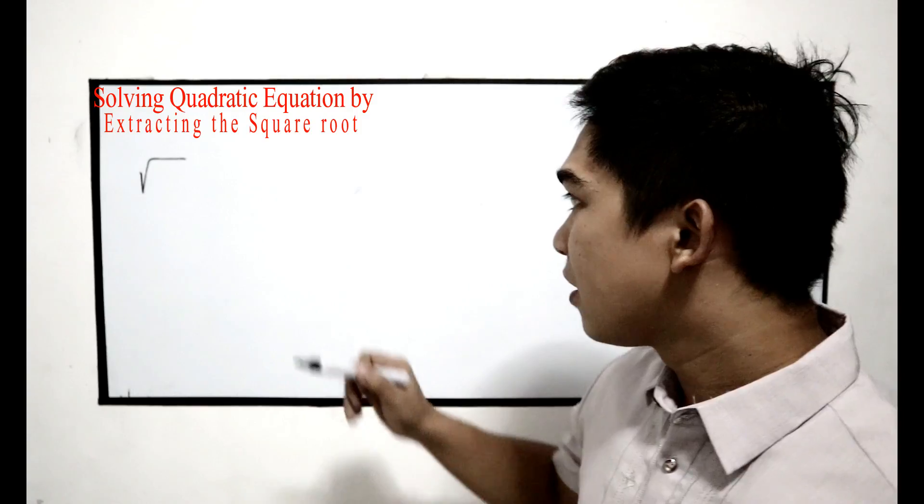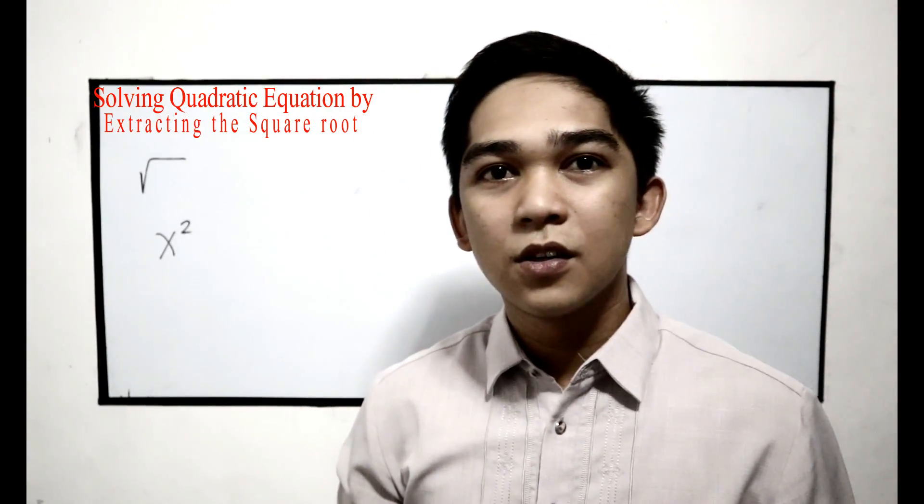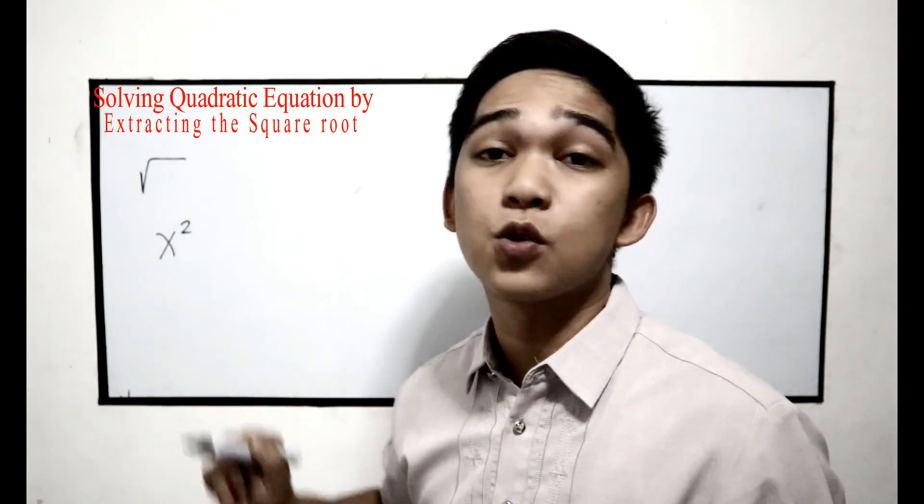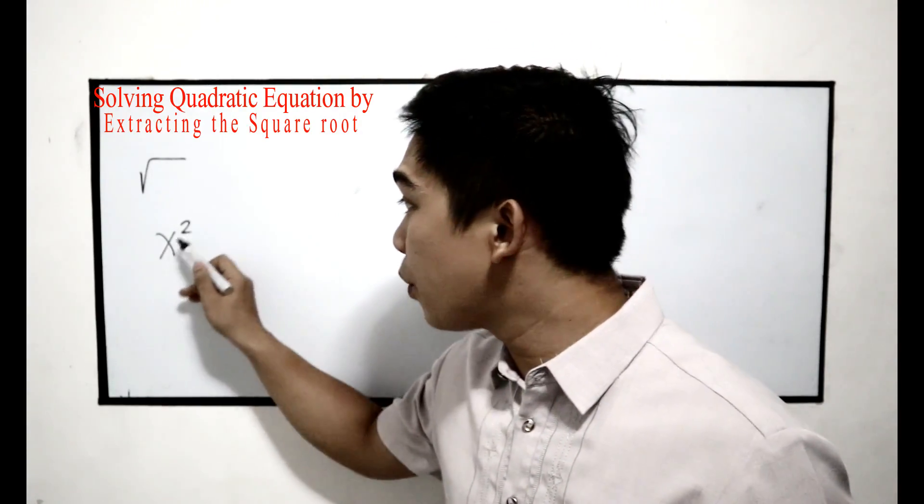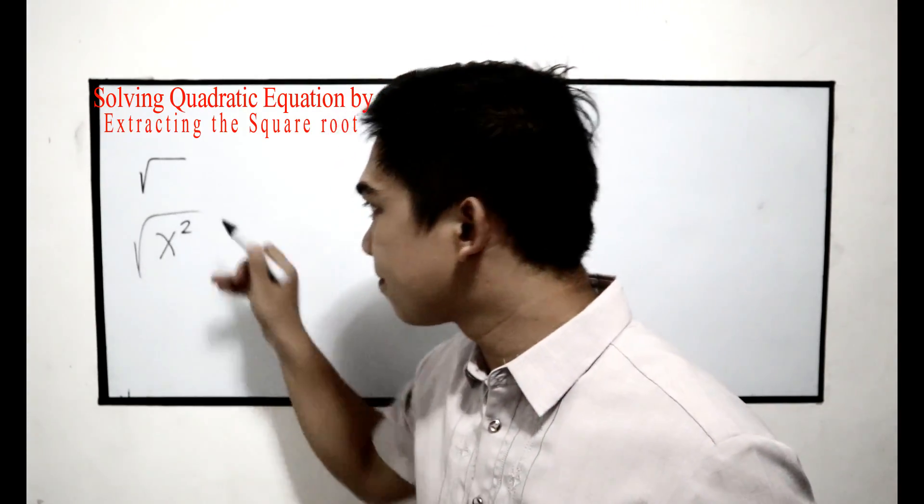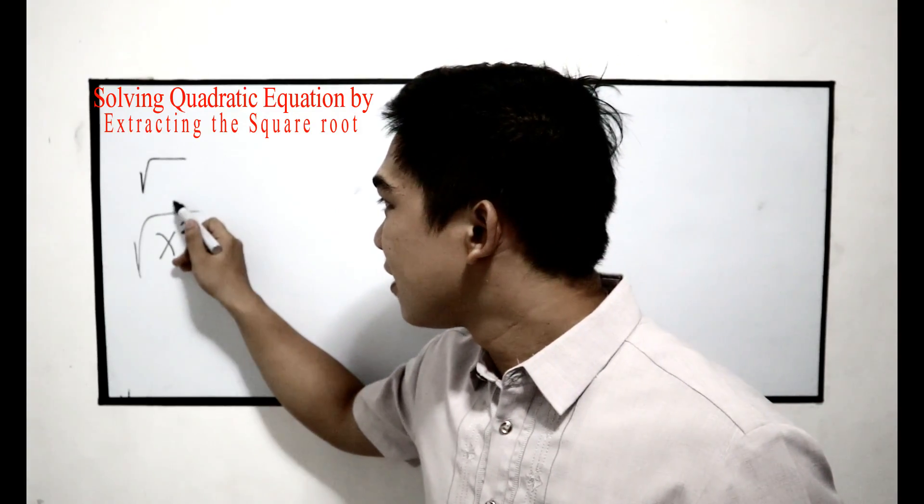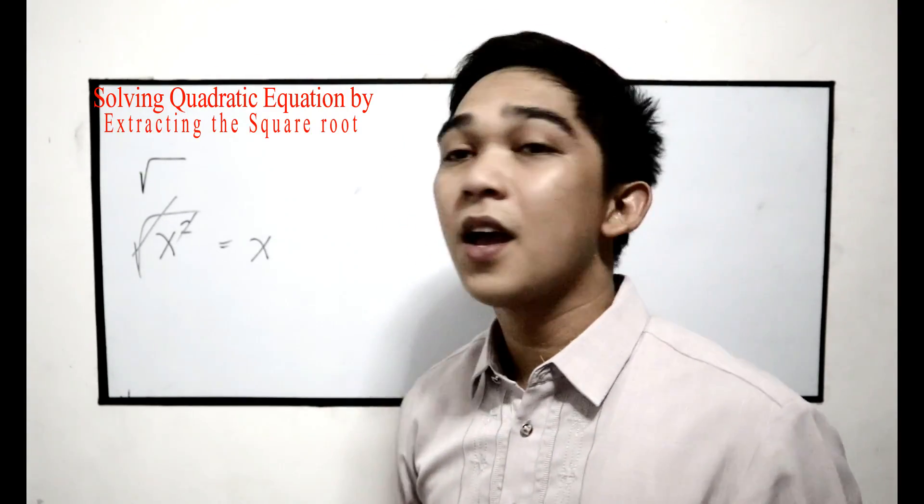Let's say if we have x squared. What is the relationship of the square and the square root? In this expression, if we're going to extract the square root, the square root will be cancelled out, and the square will be cancelled out. And this will become equal to x.